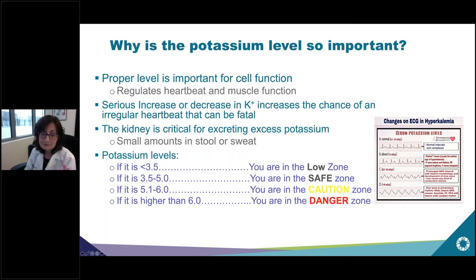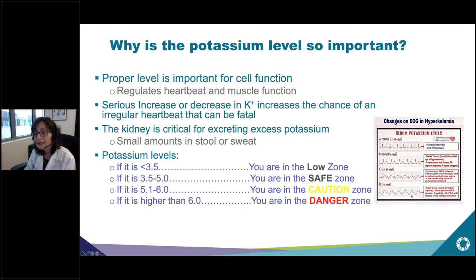If potassium is under 5, you're in a safe zone. Between 5.1 and 6, you're in a caution zone and some action probably needs to be taken by your care provider. Higher than 6, you're in a danger zone and run the risk of serious arrhythmias or irregular heartbeat. The EKG changes shown here demonstrate how a regular heartbeat becomes completely disorganized at high potassium levels, and as noted, it can be lethal.